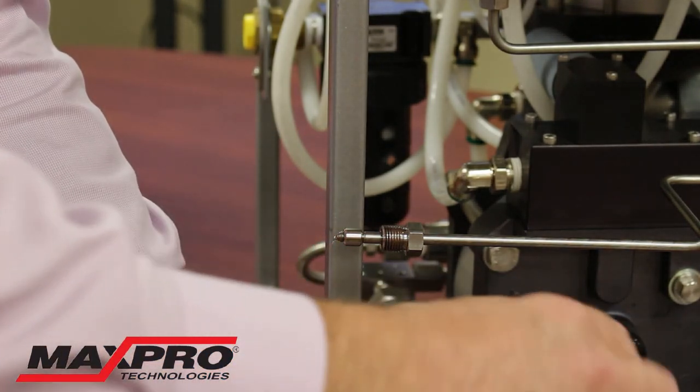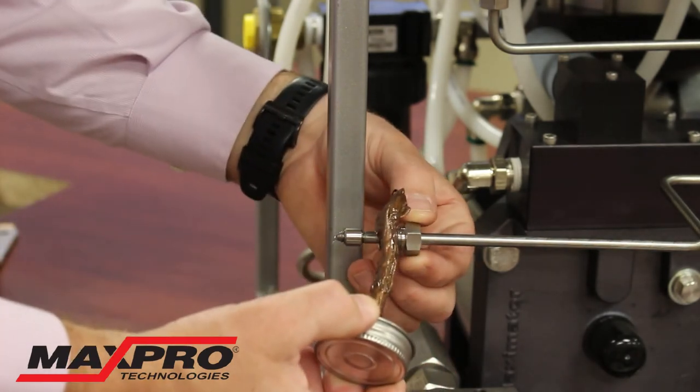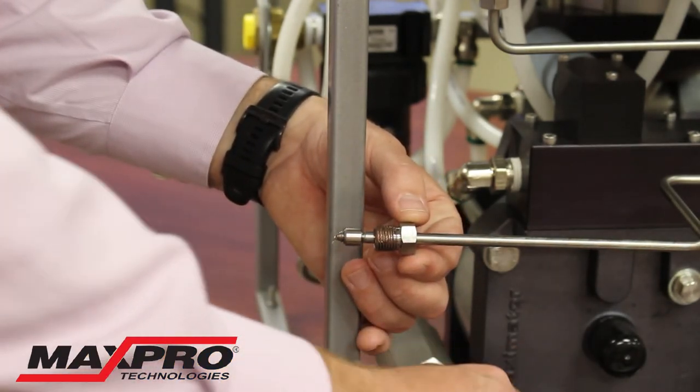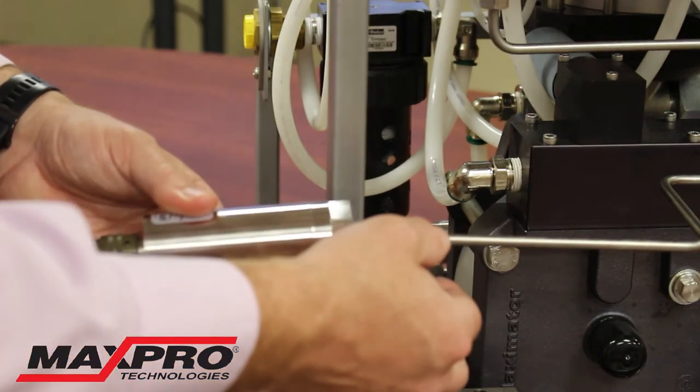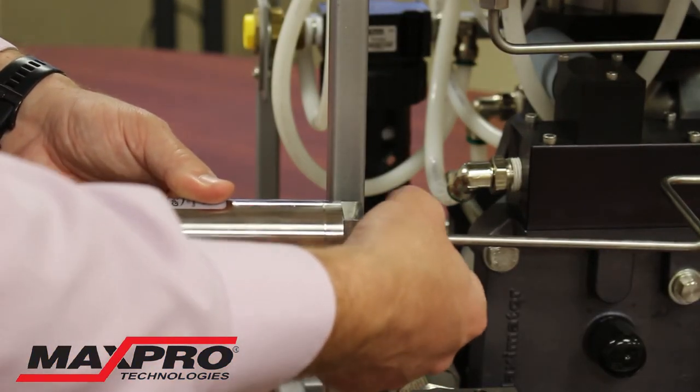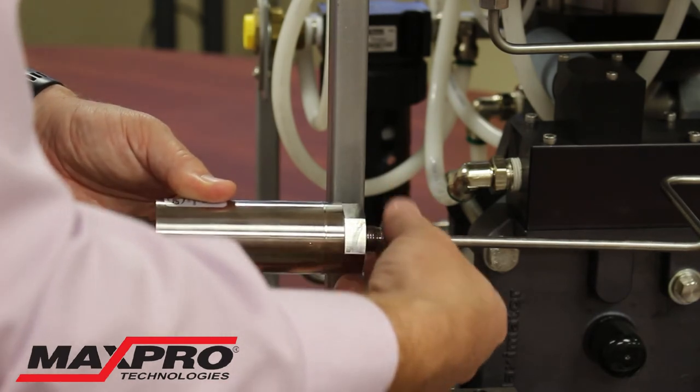And then we'll take a little bit of anti-seize and put it on the gland. Now we're going to take our transducer and thread the gland into it.